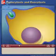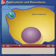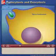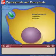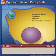Cells use three major types of endocytosis: phagocytosis, pinocytosis, and receptor-mediated endocytosis.